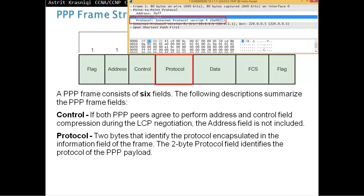Two bytes, then we have a protocol field. The two bytes that identify the protocol encapsulated in the information field of the frame. The two byte protocol field identifies the protocol, the PPP payload. So, whatever we are carrying, the PPP identifies what protocol. For example, Internet Protocol version 4 here.